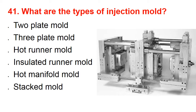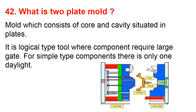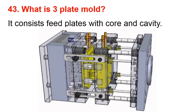The types of injection mold are: two plate mold, three plate mold, hot runner mold, insulated runner mold, hot manifold mold, and stack mold. Question number forty-two: What is the two plate mold? It is a mold which consists of core and cavity situated in plates. It is a logical type of tool where the component requires a large gate for simple components, and there is only one daylight.